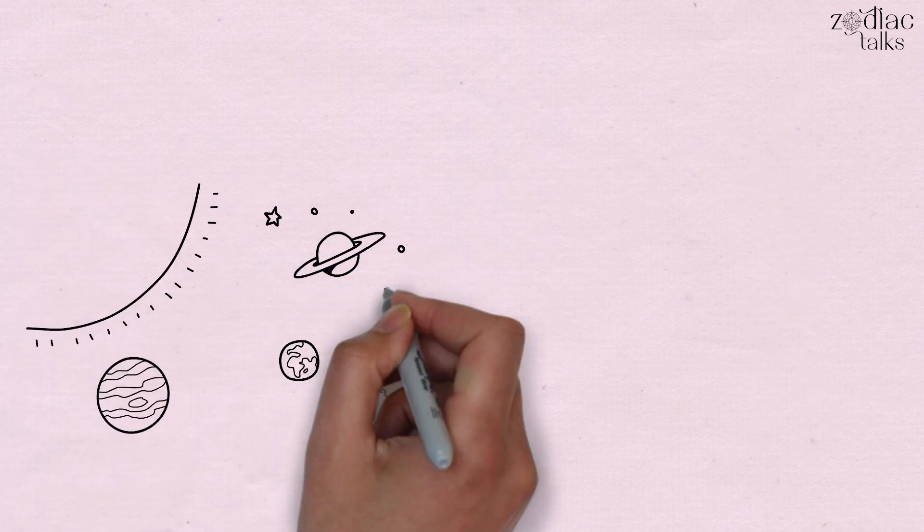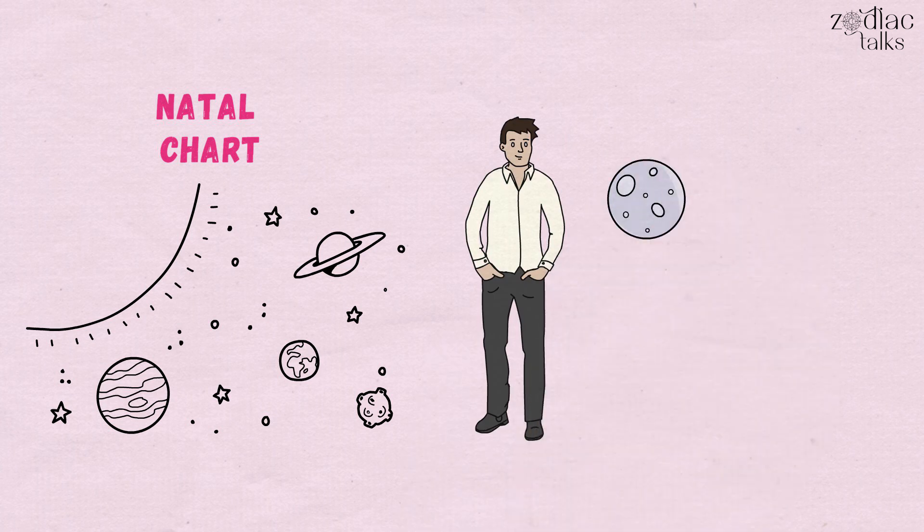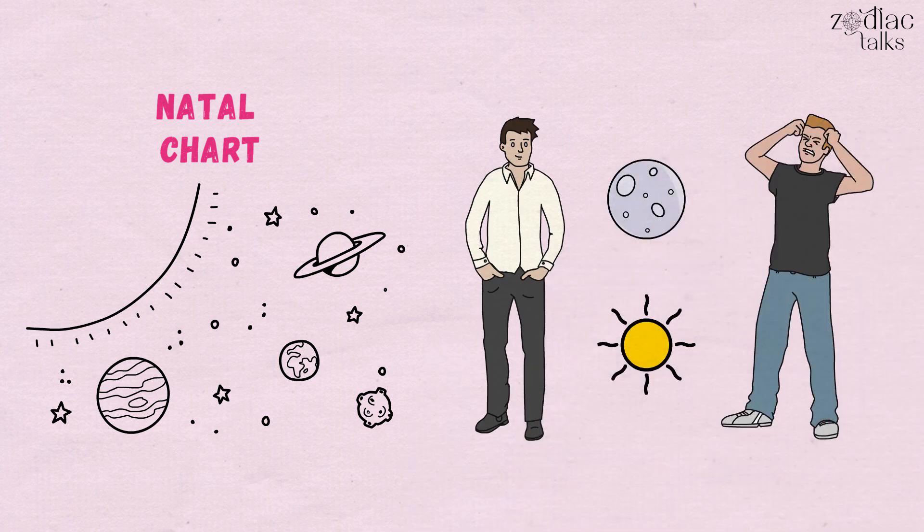Each planet and celestial body has its place in our natal chart, and individuals with an Aquarius moon may have a different personality than those with an Aquarius sun sign.